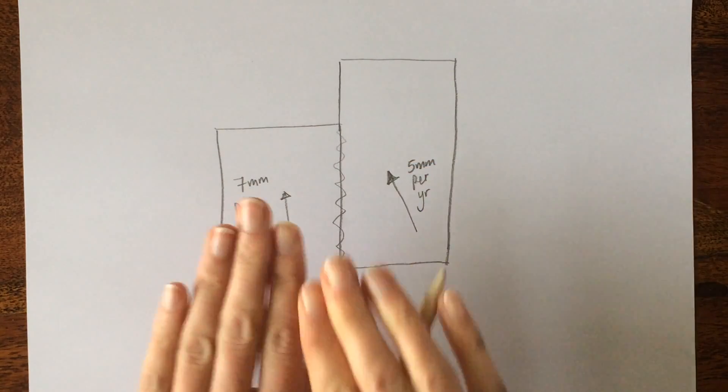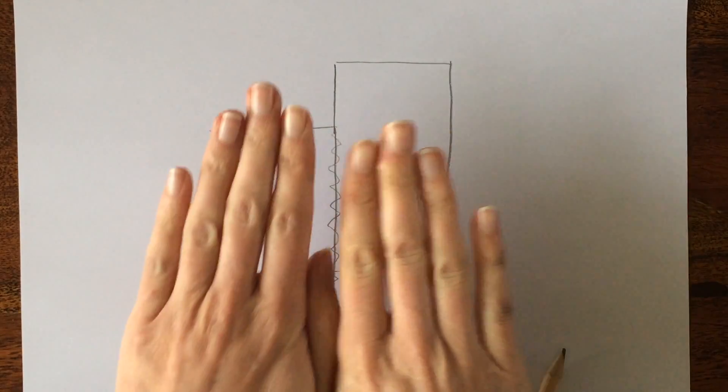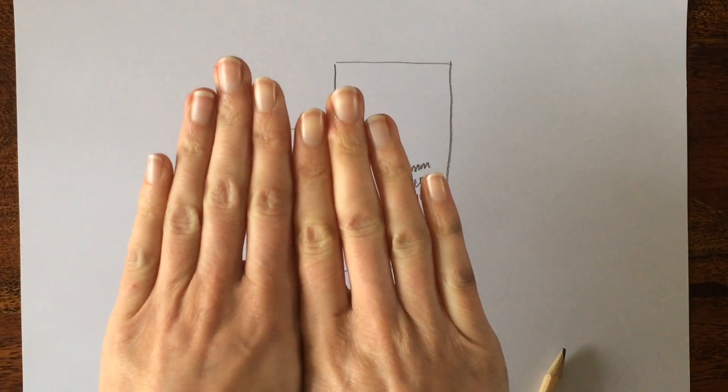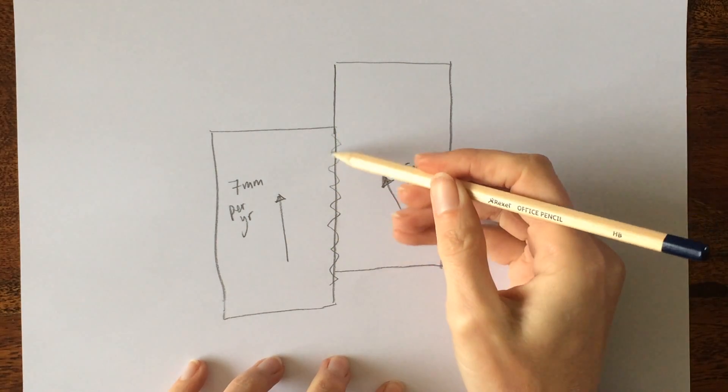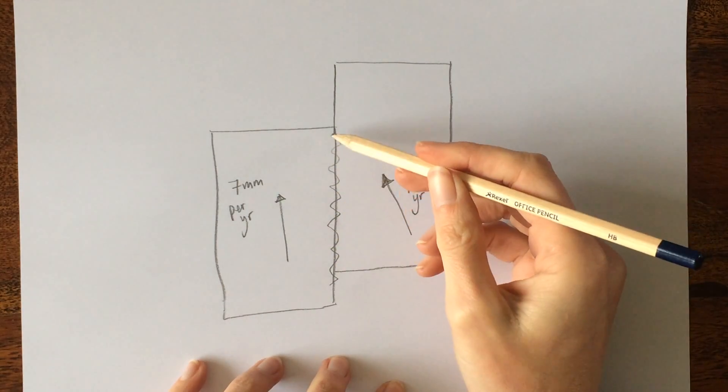Because remember, they're not sliding smoothly. These pieces of crust are sliding side by side and they're going to get stuck. The pressure is going to be great along this edge. The friction is going to be great.